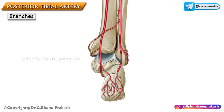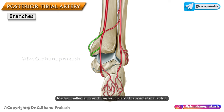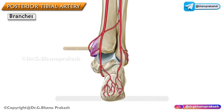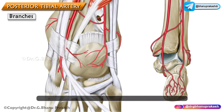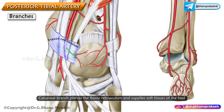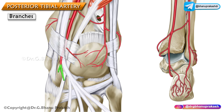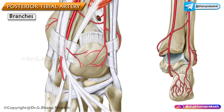Next is the medial malleolar branch, which passes towards the medial malleolus, and the calcaneal branch, which pierces the flexor retinaculum and supplies all the soft tissues of the heel. The terminal branches are the medial and lateral plantar arteries of the sole, and this is what the posterior tibial artery is about.